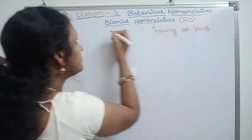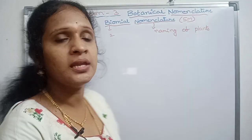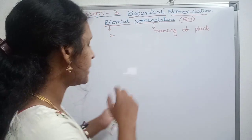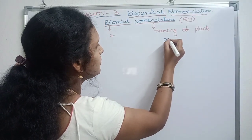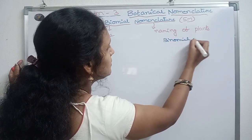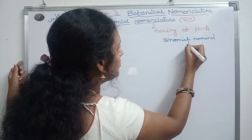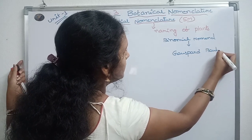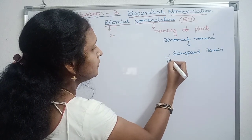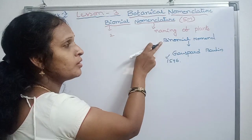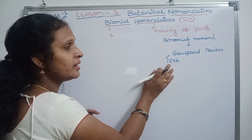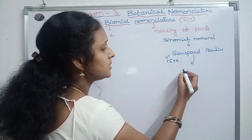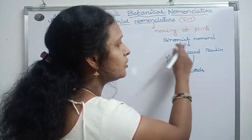We will discuss the naming of plants by two words. Binomial nomenclature was first introduced by Gaspard. This means two words.